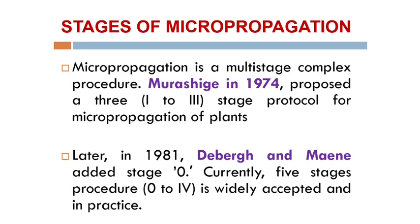These are all the stages of micropropagation. Micropropagation is a multi-stage complex procedure. In 1974, Murashige first proposed a three-stage concept — stage 1, stage 2, stage 3 — a totally three-stage protocol. Later, in 1981, Debergh and Manet added stage 0, so currently the five-stage procedure — stage 0, 1, 2, 3, and 4 — is widely accepted and in practice.